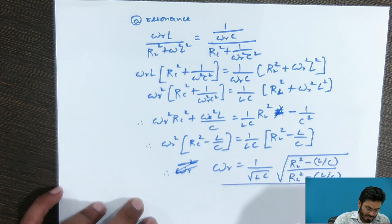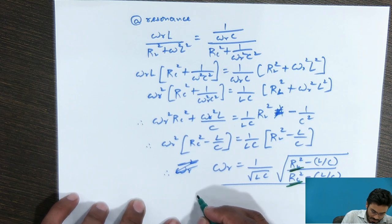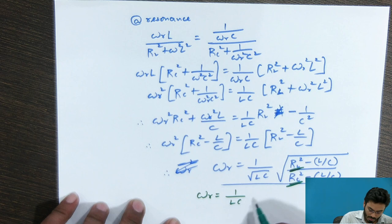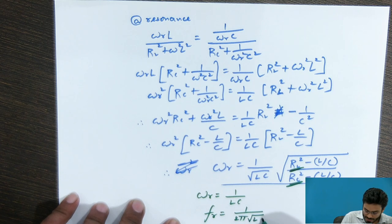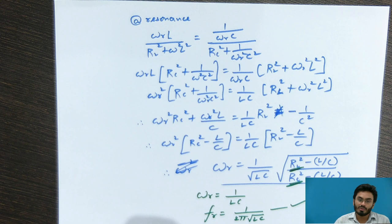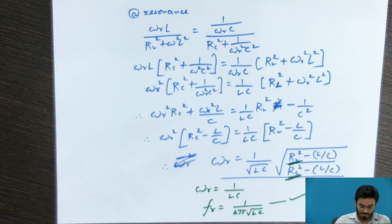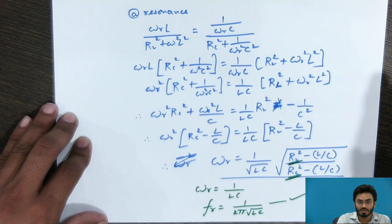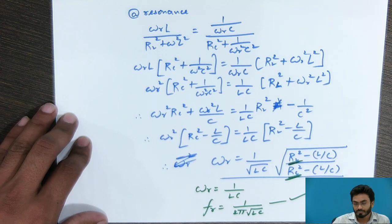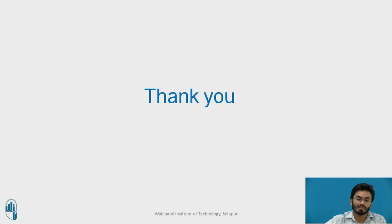In the special condition where RL equals RC, the expression simplifies to ωR = 1/√(LC), which is 1/(2π√(LC)). This is the final expression for the resonant frequency of a simple parallel resonant circuit. This expression is very similar to the series resonant frequency, meaning resonance occurs at the same frequency whether the circuit is connected in series or in parallel. The tank circuit will be discussed in the upcoming video.